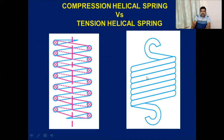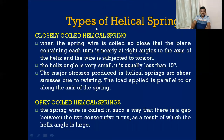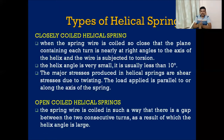The tensile and compression helical springs are also known as closely coiled and open coiled helical springs respectively. Since the coils are closely packed or in contact with each other, the tensile helical spring is also known as a close coiled helical spring, whereas in compression helical springs there are gaps between adjacent coils — the coils are free to open — so that spring is also known as an open coil helical spring.